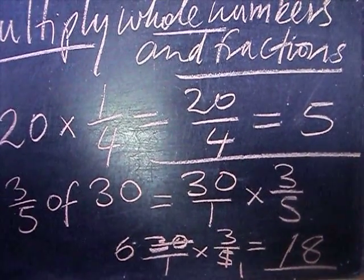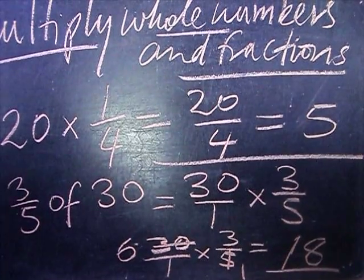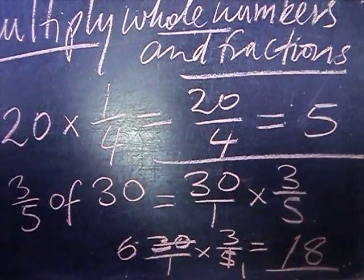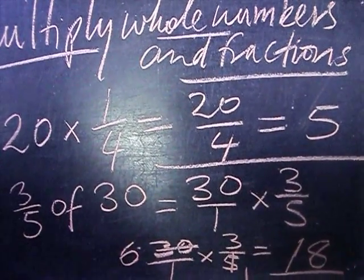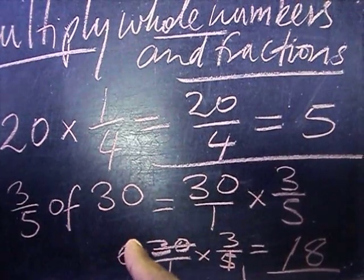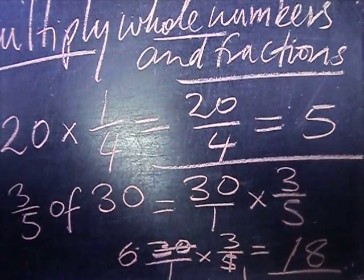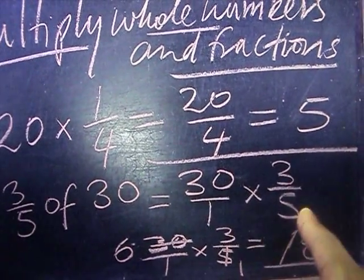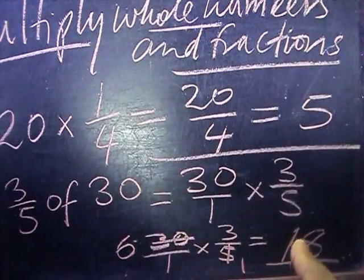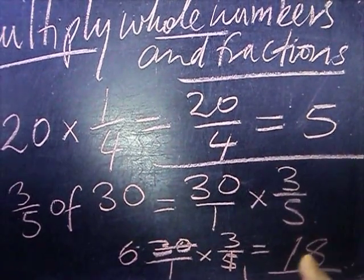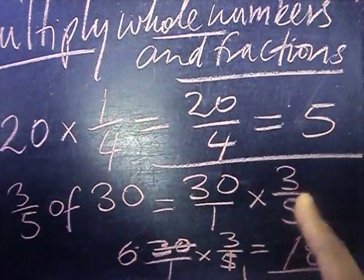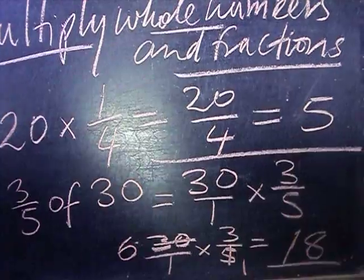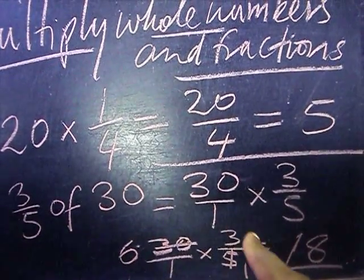We don't have any more cancellation to do, so we simply multiply the whole number, that 6 by the numerator. 6 over 1, we multiply the 6 times the 3, so 6 times 3 is 18. And 18 over 1 as a whole number is 18. So the answer is equal to 18.